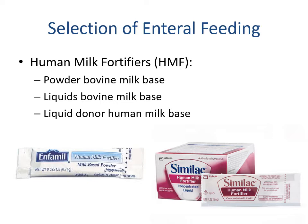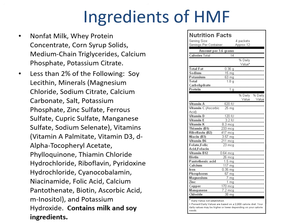Human milk fortifiers come as powder bovine milk base, liquid bovine milk base, or liquid donor human milk base — this is where milk banks come into play. They provide additional calories and nutrients when prepared with human milk. The focus is on extra calories, but especially the micronutrient profile. Mom's body helps with protein and sodium; the fortifier supplements the remaining vitamins and minerals.